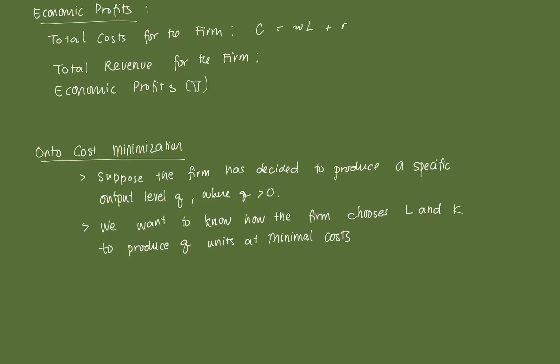which is the rental rate of capital, times K, or the number of machine hours. So this is your total expenditure on labor. And this one here is your total expenditure on capital. So that's our costs. Remember, again, we have two inputs only. That's labor and capital.